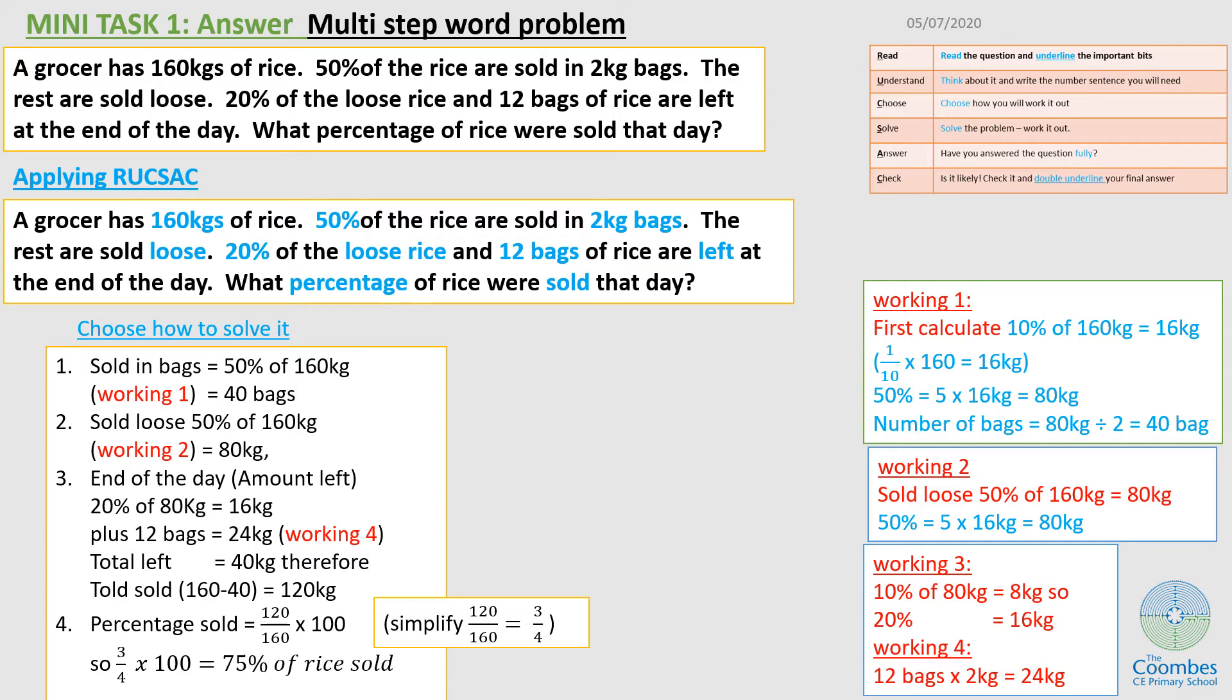Now let's read the question. A grocer has 160 kg of rice. 50% of the rice are sold in 2 kg bags. The rest are sold loose. 20% of the loose rice and 12 bags of rice are left at the end of the day. What percentage of rice were sold that day?